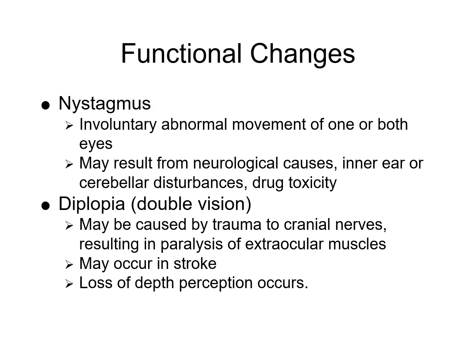Nystagmus is involuntary movement of one or both eyes — it can be a back-and-forth rhythmic jerky motion or circular motion. This abnormality may be seen in neurological cases, inner ear or cerebellar disturbances, drug toxicity, or psychiatric or seizure patients. Diplopia, or double vision, or paralysis of the upper eyelid known as ptosis may be caused by trauma to the cranial nerves resulting in paralysis of the extraocular nerves. This can happen in stroke patients, who may also lose depth perception, causing falls because they cannot judge the distance of steps.